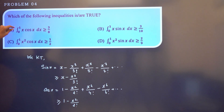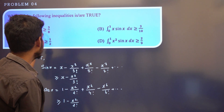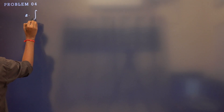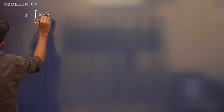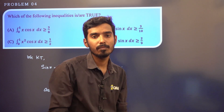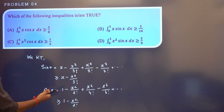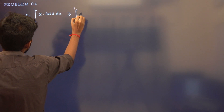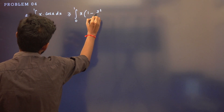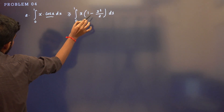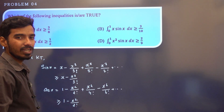What is option A? We need to check: integration of 0 to 1 of x·cos(x) dx ≥ 3/8. Since cos x is always greater than or equal to 1 − x²/2!, we substitute: the integral becomes ∫₀¹ x·(1 − x²/2) dx = ∫₀¹ (x − x³/2) dx.